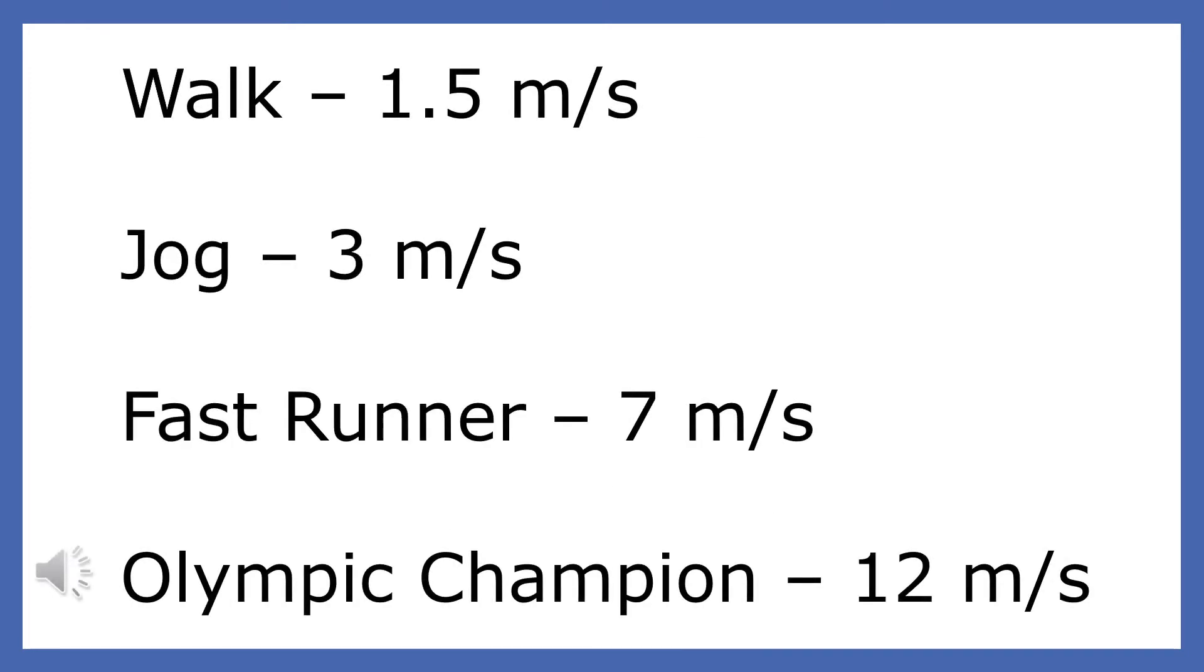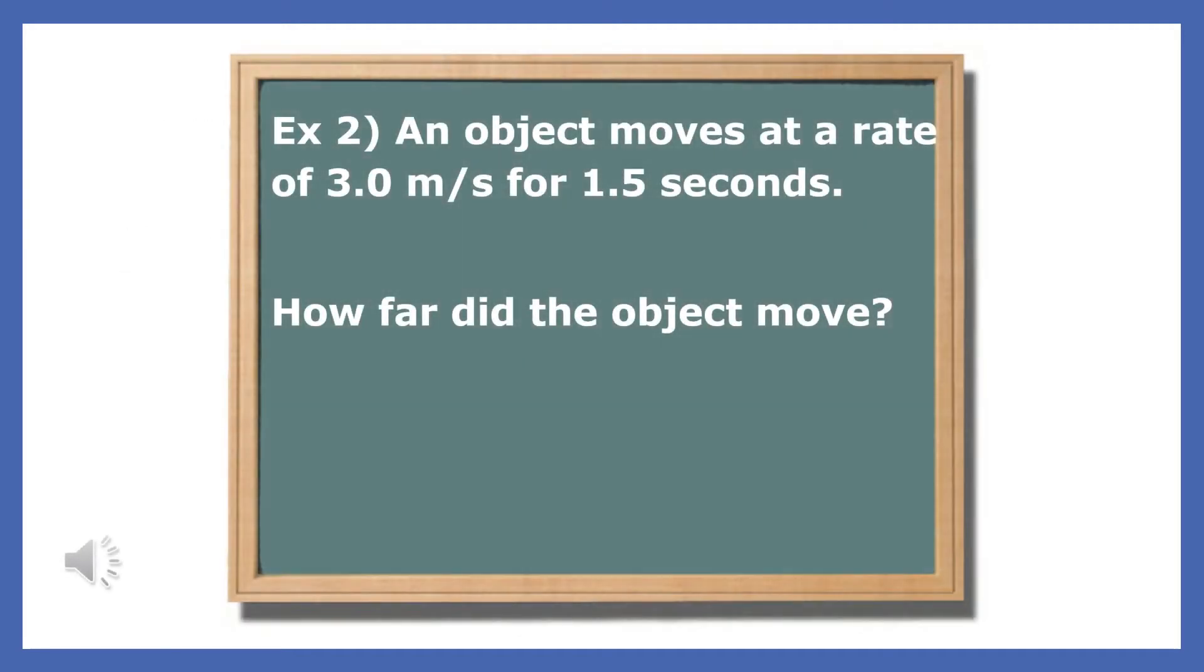These numbers should help you make some sense of the speed numbers you'll be calculating in class. Human beings are able to move at speeds between 1.5 meters per second and 12 meters per second. Let's try another problem. An object moves at a rate of 3 meters per second for 1.5 seconds. How far did the object move? You probably were able to solve the last problem in your head, but this one's a little bit trickier.